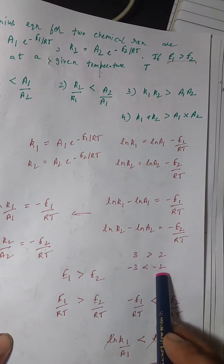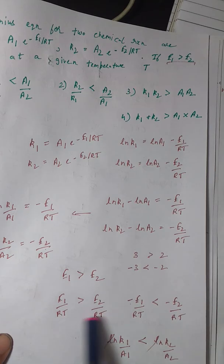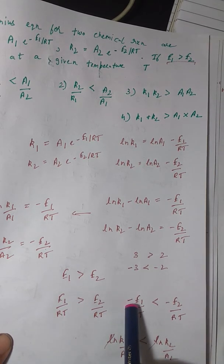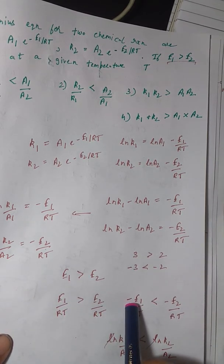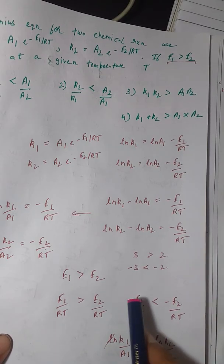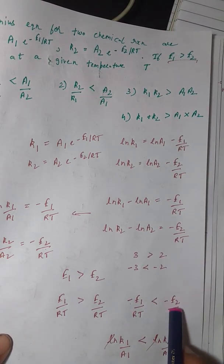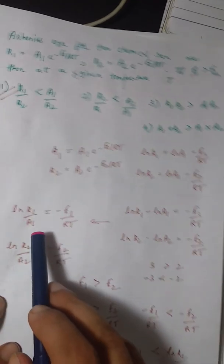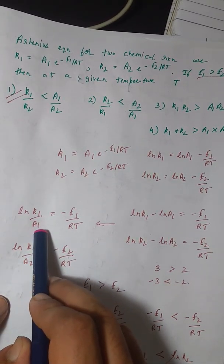3 is greater than 2, right? But if we take minus on both the sides, then -3 is less than -2. So similarly, if here E1 is greater than E2/RT, but if we add negative sign on both sides, then -E1/RT becomes less than -E2/RT.